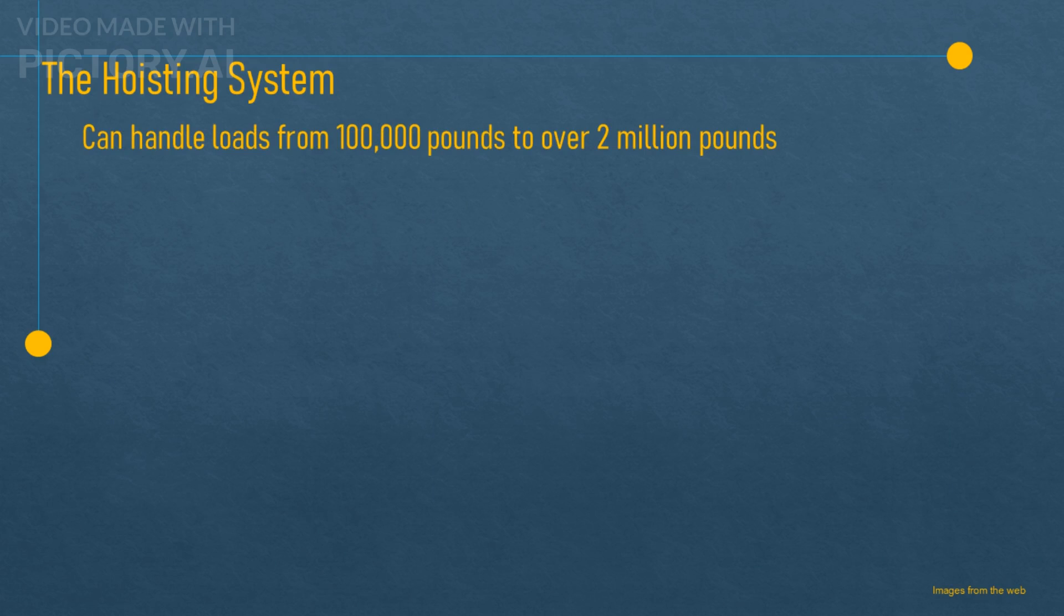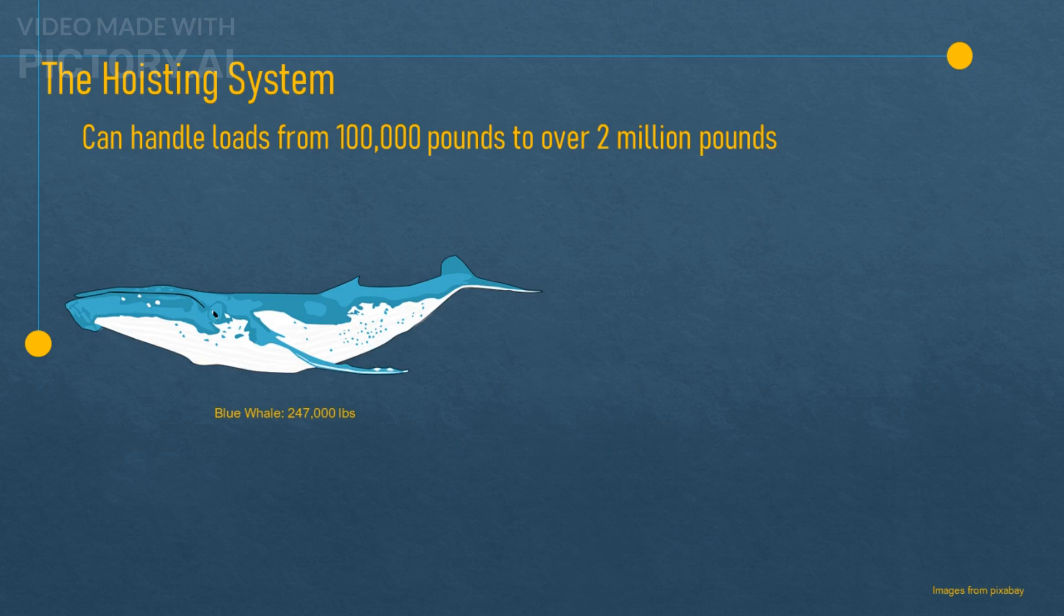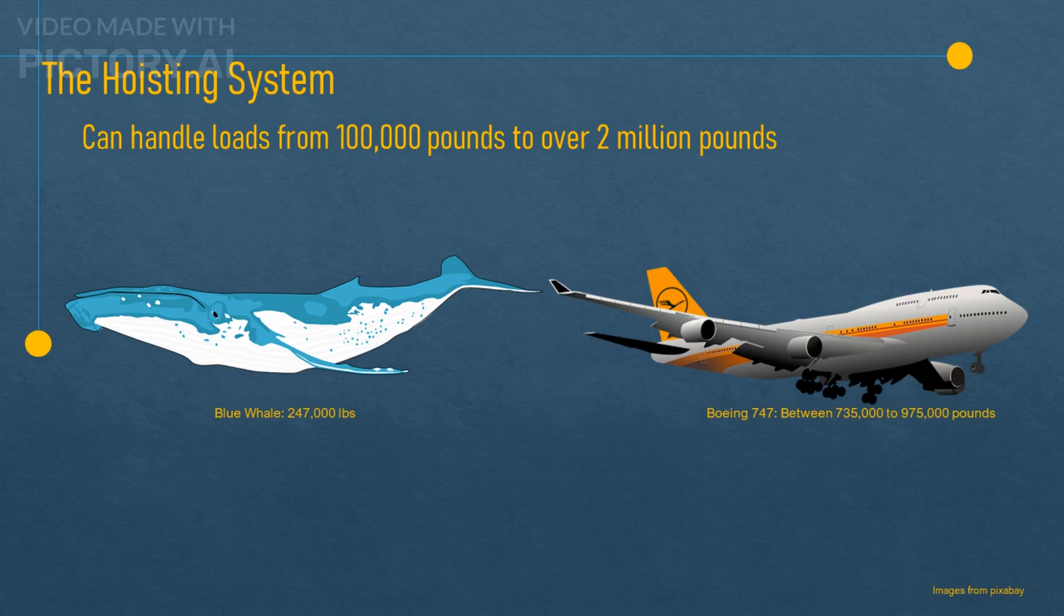The hoisting system can handle loads from 100,000 pounds to over 2 million pounds, depending on the size and type of the rig. That's like lifting a whole blue whale, or a Boeing 747.